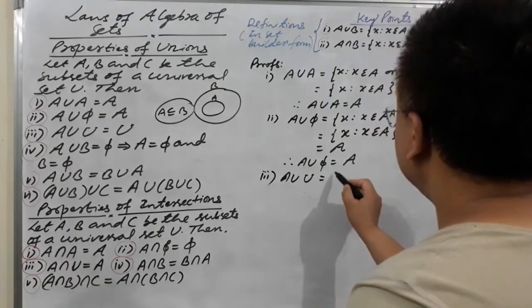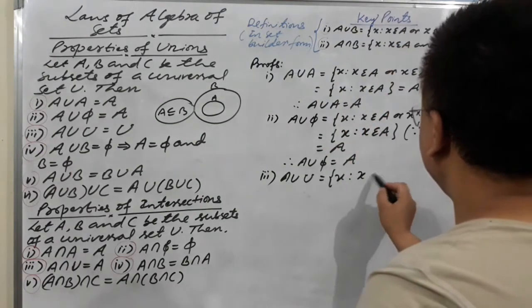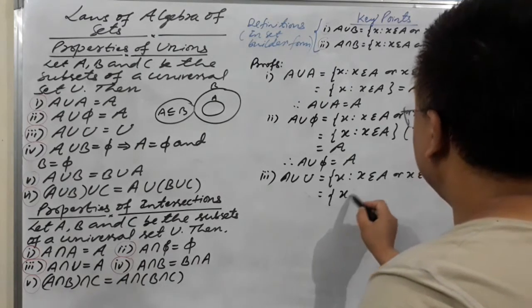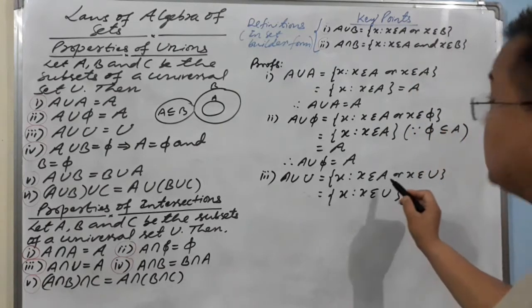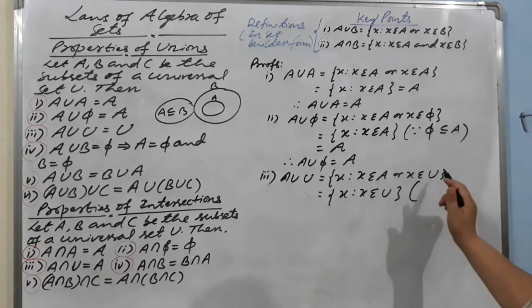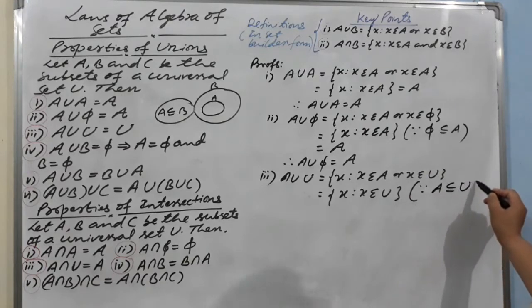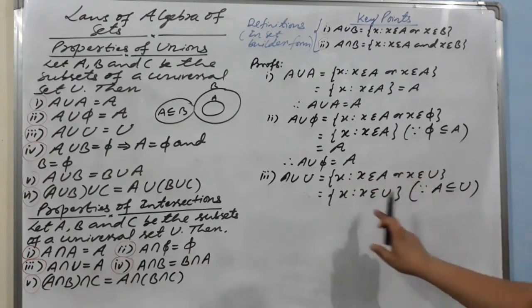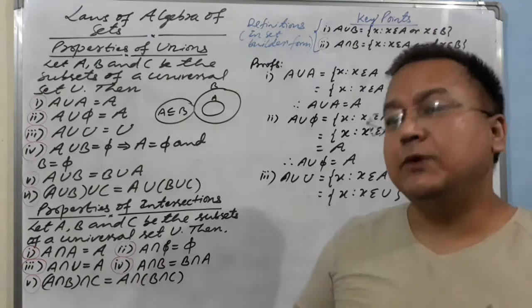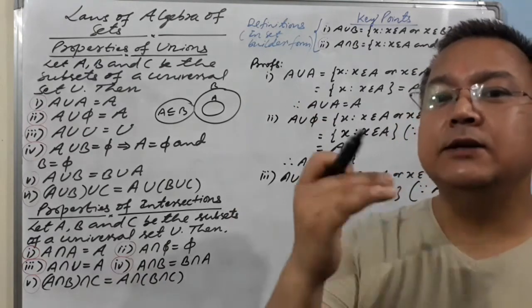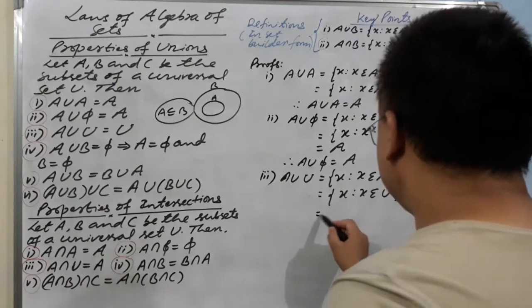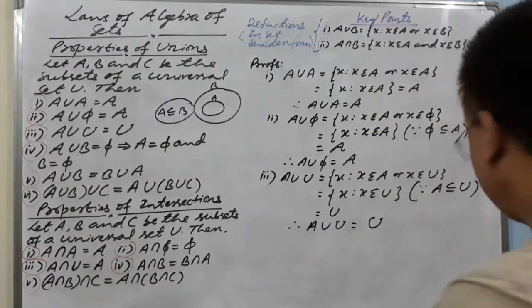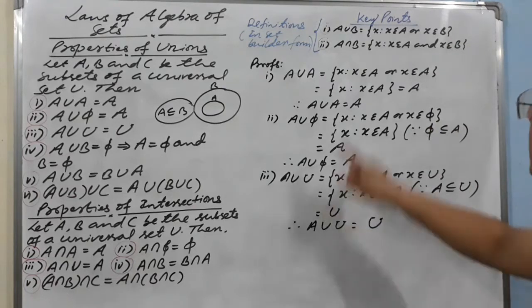Third: A union U — using the definition — equals {x such that x belongs to A or x belongs to U}. Since A is a subset of U, and U is the universal set that contains A, we can simply write {x such that x belongs to U}. Therefore A union U is equal to U.